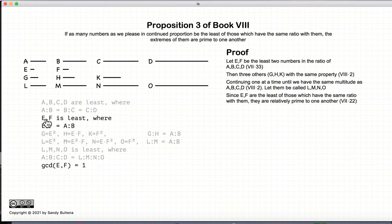Now, E and F, by definition, was the least ratio equal to A to B. So E and F are relatively prime, according to Proposition 22 of Book 7.